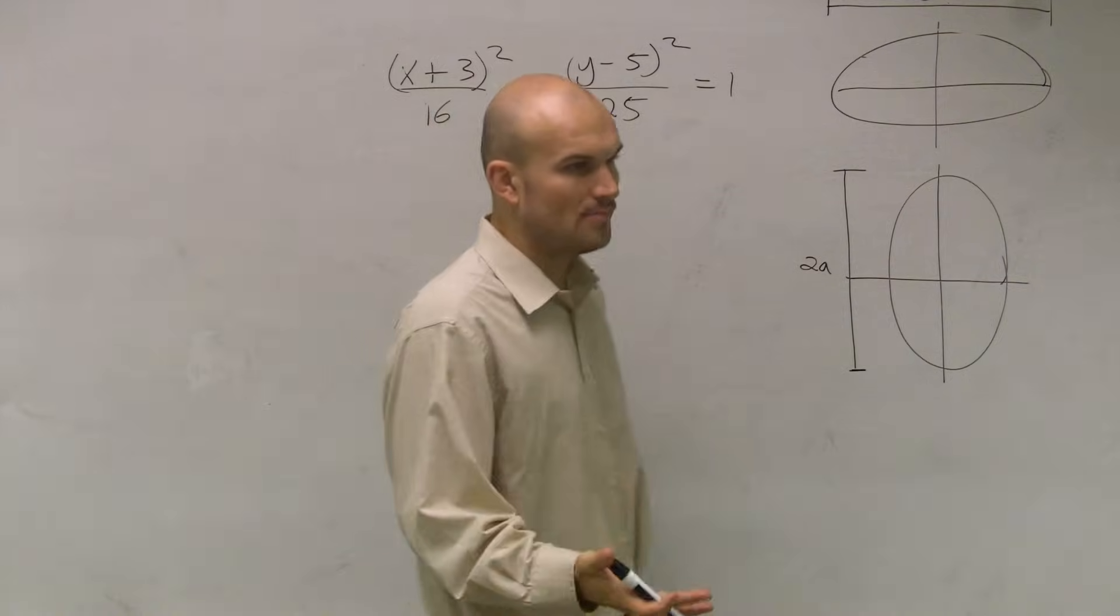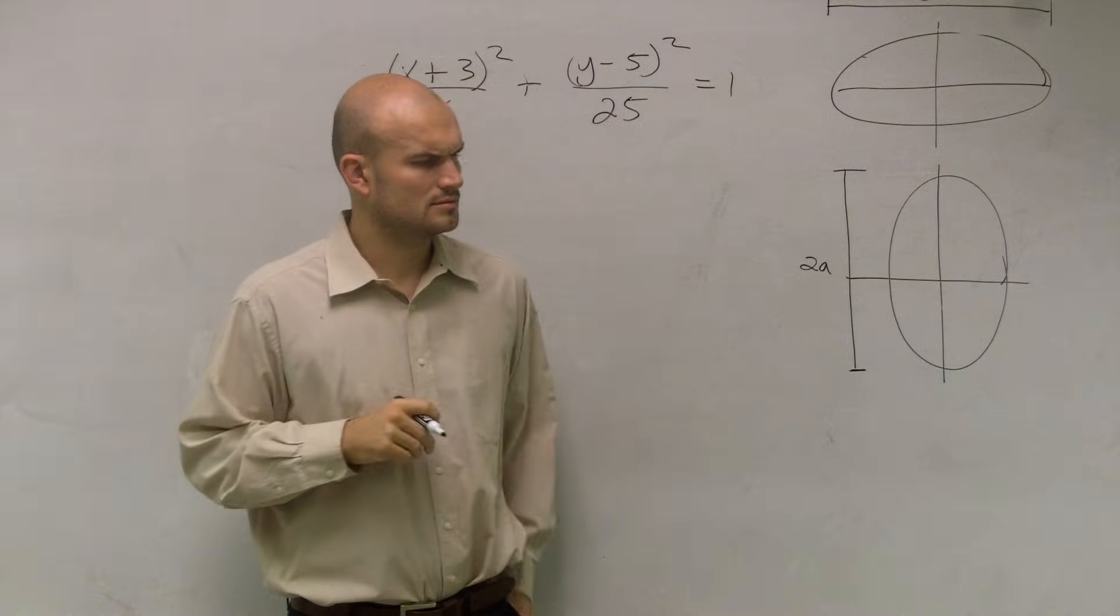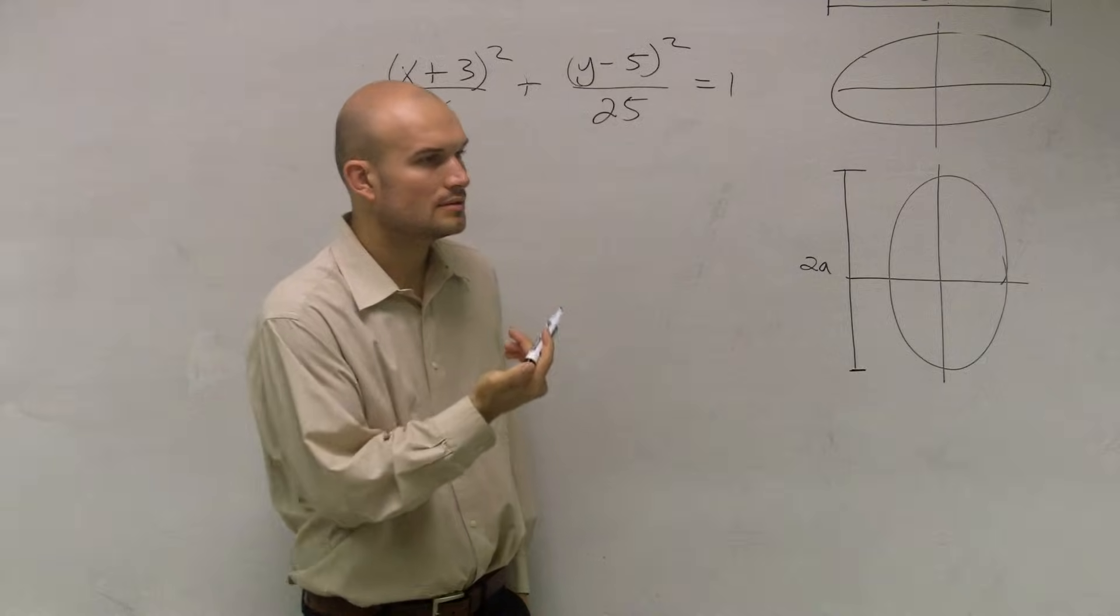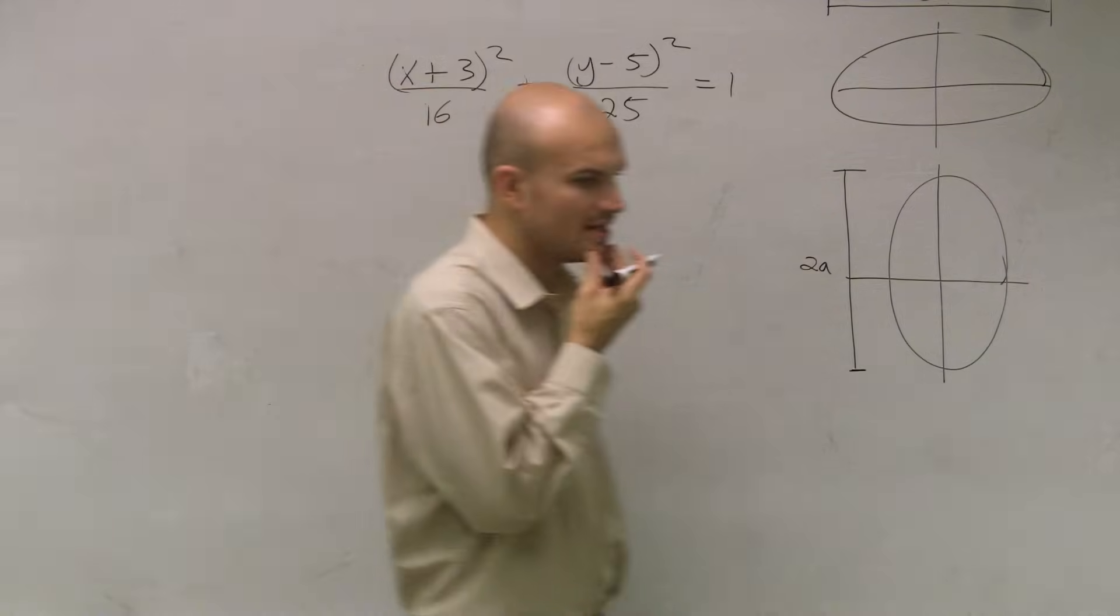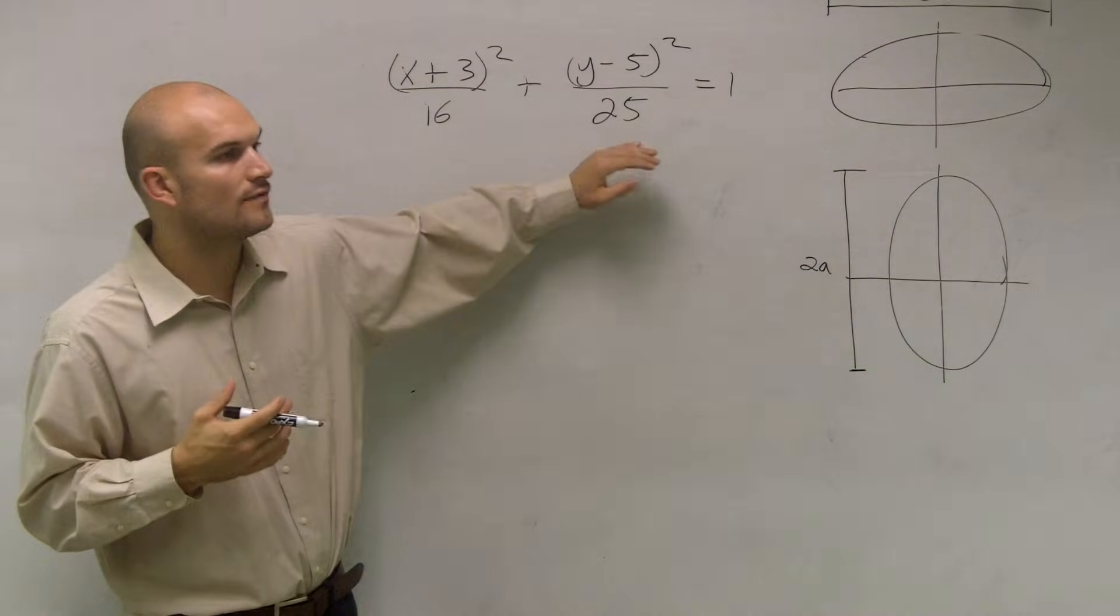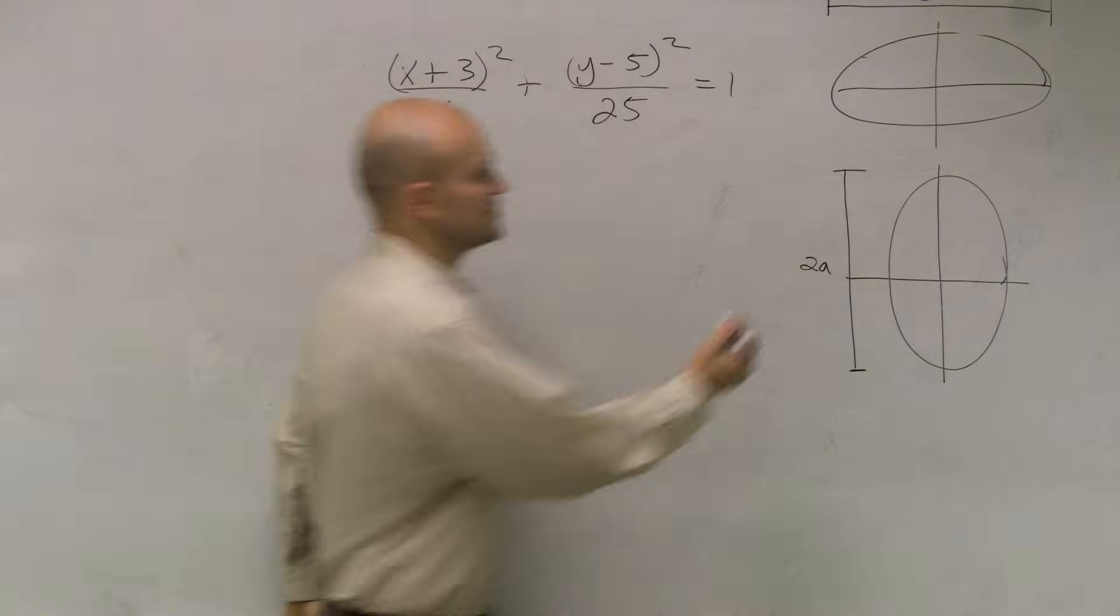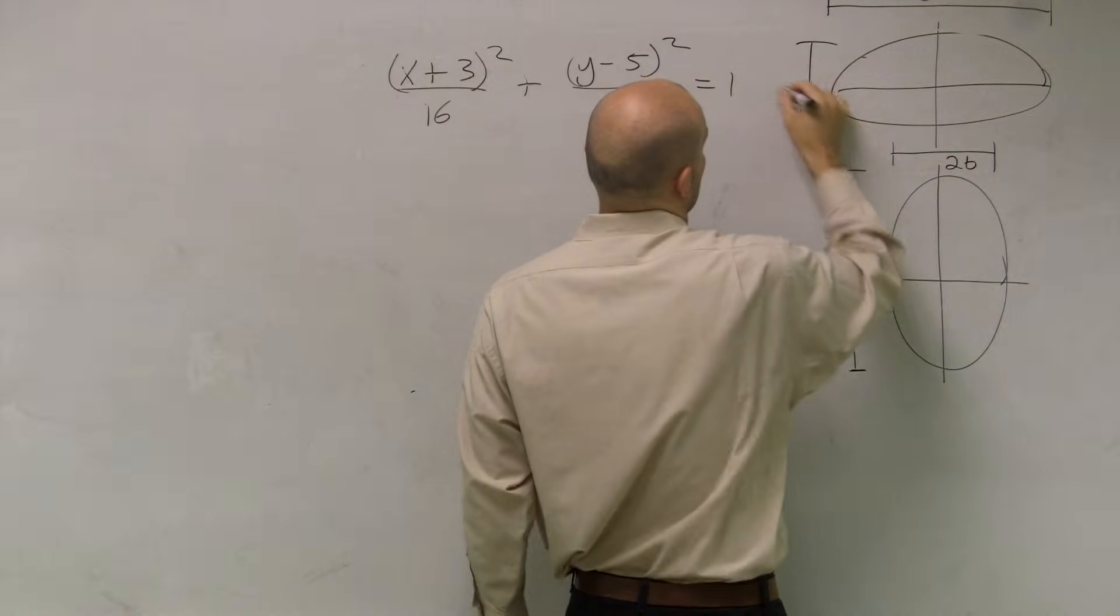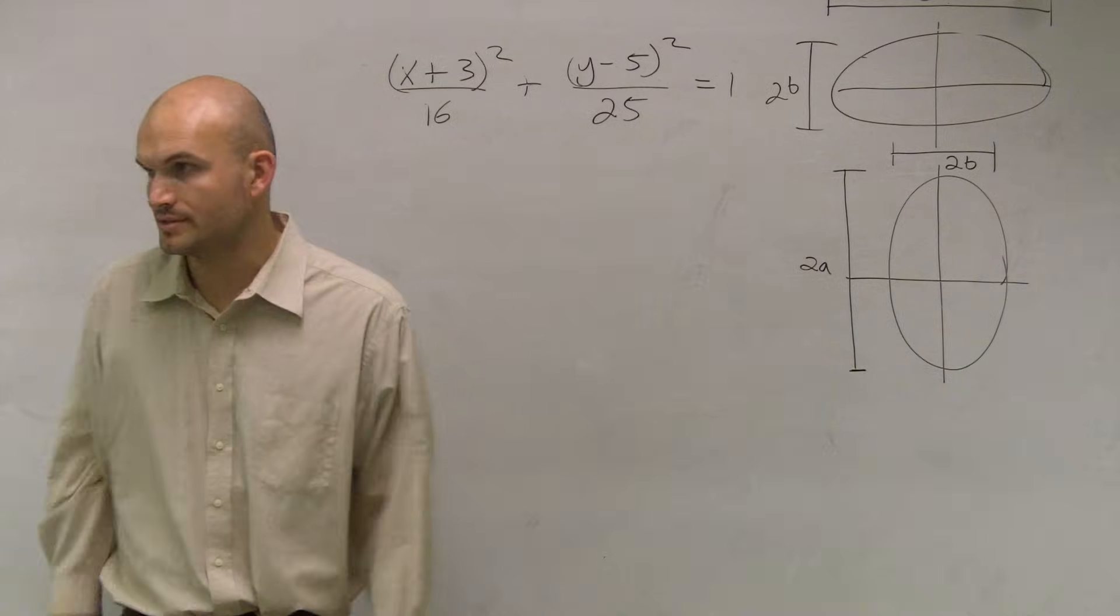And our major axis is going to be always under whatever term we have. If you look at this, the other term, our minor axis, what we call, is going to be 2b. And you can obviously see that b is smaller than a, right?